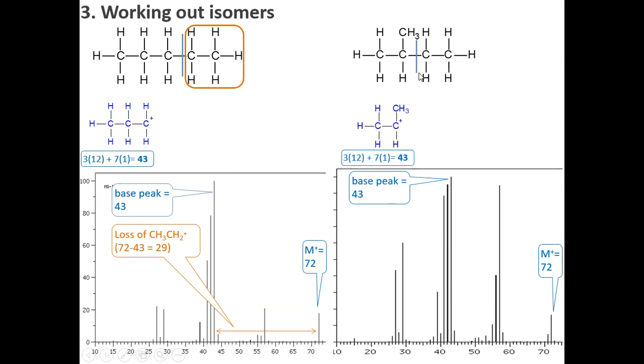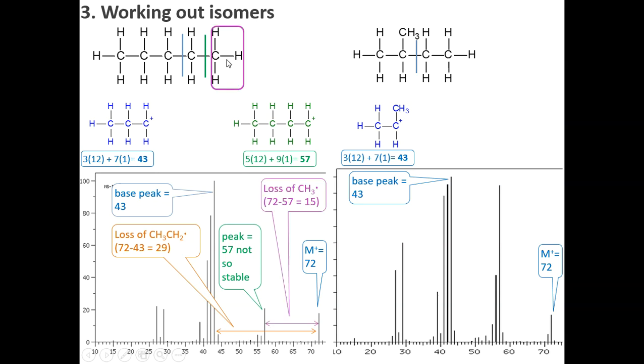Here, the same thing, we can break it and so we lose the ethyl, get the propyl. And notice it's a secondary carbocation. Here we have a peak at 57, which is not as stable as this one. And that is from a butyl. So the bigger the molecule or the fragment, often the less stable. It's a general rule of thumb that doesn't always follow, of course. But that's been a loss of a methyl.